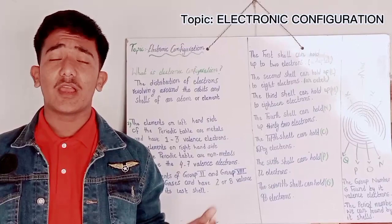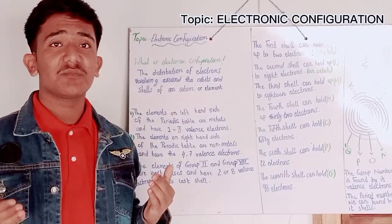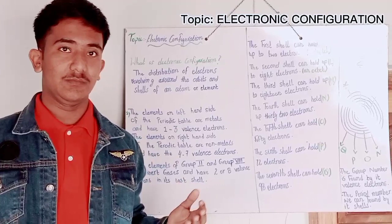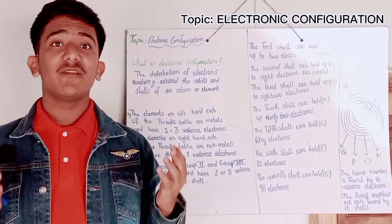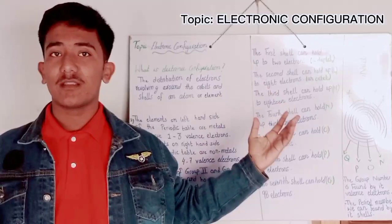In our previous topic, I had told you about what are electrons. Electrons are the negatively charged particles present in the shells or orbits around the nucleus of an atom. Today I will tell you about what is electronic configuration, how many valence electrons an atom carry, the name of the shells and how many electrons they carry.